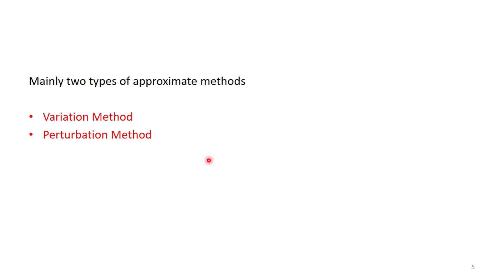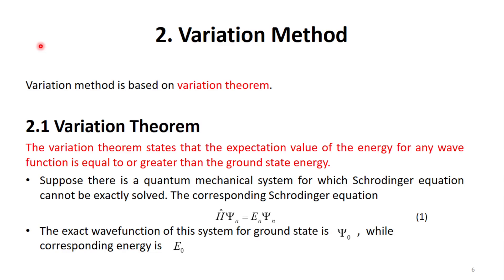Mainly two types of approximate methods are used: one is the variation method and the other is the perturbation method. This video lecture will cover the variation method, which is based on the variation theorem. In order to understand the variation method, one needs to understand the variation theorem.